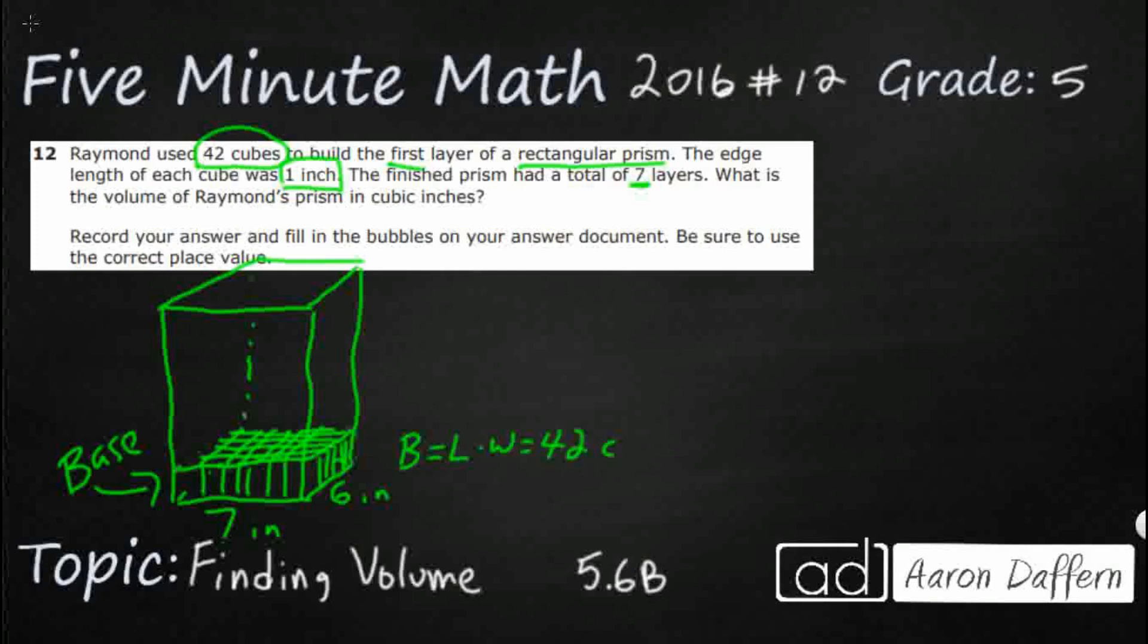Those are actually 42 cubes. And so what we're looking at is we're looking at how many of those same layers can we put into this particular shape. And what they gave us is they went ahead and gave us the height of 7 inches. So there are seven layers. This first one being there and they're all identical.